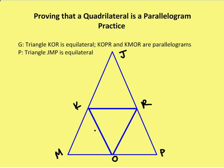If I have two angles that are congruent — we'll do these in red — I have angle KJR congruent to angle KRJ, then I can say that KJ and KR are going to be congruent, because if angles are congruent, the sides opposite them are congruent as well. And if I know that angle JKR is congruent to angle JRK, so I have an equiangular triangle, then JR, KR, and JK are all congruent. So if I have an equiangular triangle, I also have an equilateral triangle.